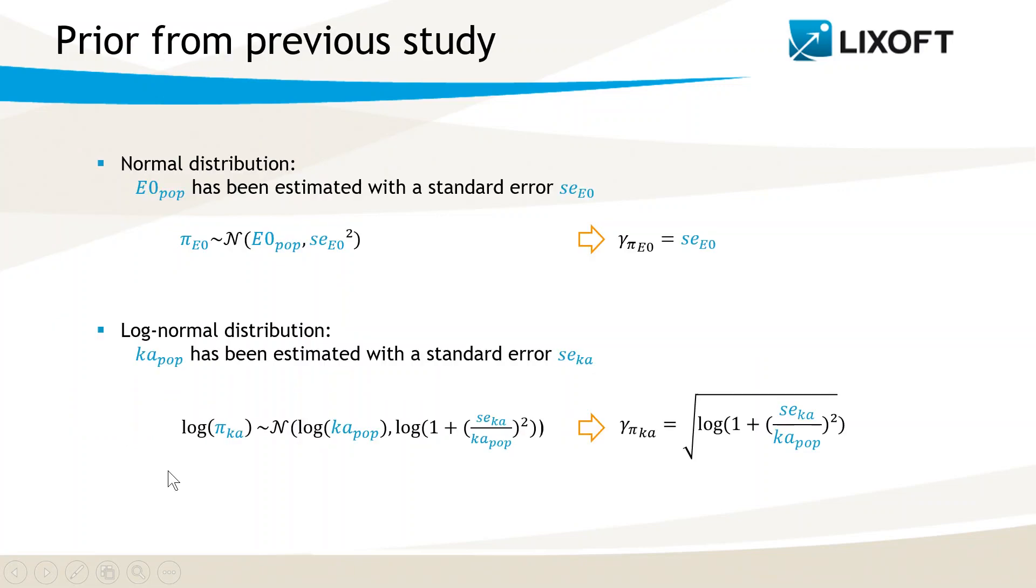If the prior comes from a previous study, the standard deviation could come from the standard error estimated for this parameter in the study, because it represents the uncertainty of the estimate. So if the parameter has a normal distribution in the previous study and the current model, like a baseline response is 0 for example, then the prior distribution is a normal distribution as well, with a standard deviation equal to the estimated standard error.